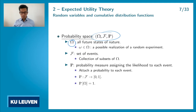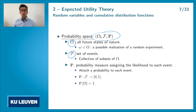We also have F, which is what we call a set of events — basically a collection of subsets of our universe omega. For example, an event could be that you throw an even number when you throw a die, or that you throw something bigger than three, or smaller than five. So these are events — things that can happen with our random experiment.